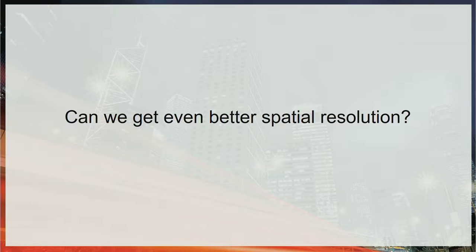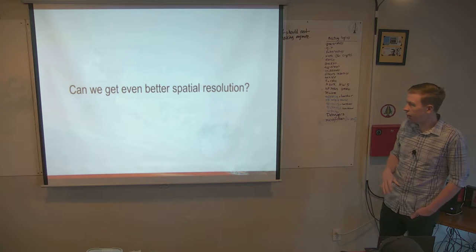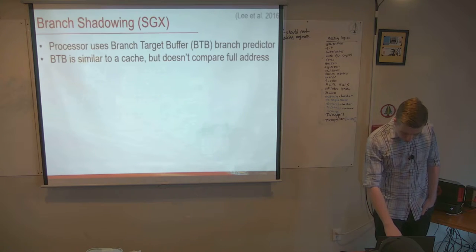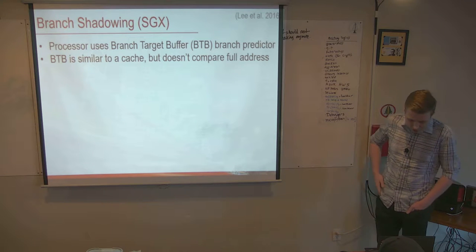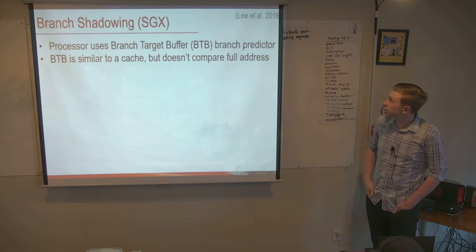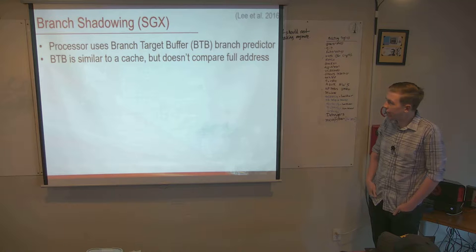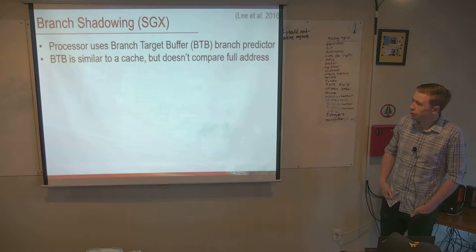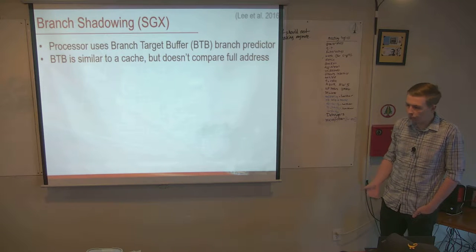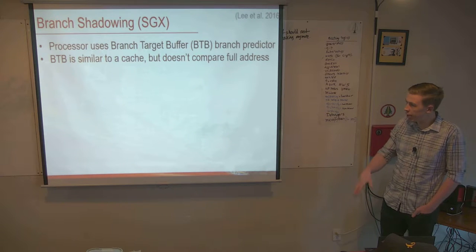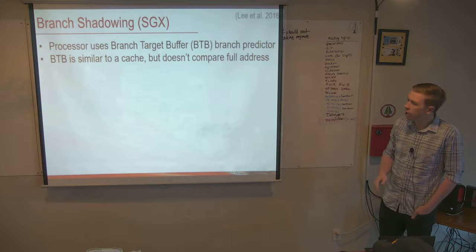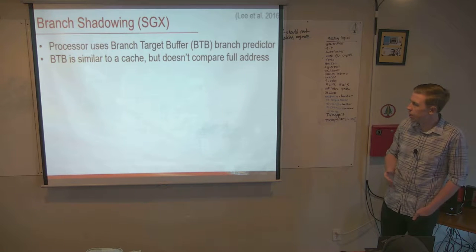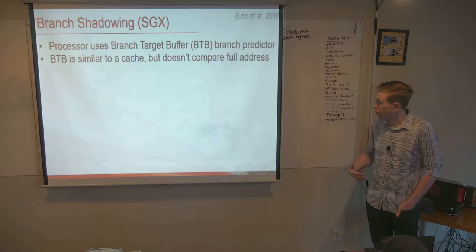The question is: can we get even better spatial resolution than the 64-byte limit from the L1 data and instruction caches? On Intel SGX, that is possible using something called a branch shadowing attack. The branch shadowing attack uses the branch target buffer for branch prediction — when you encounter a branch or if-statement, you want to predict which direction it takes because that makes your process run more quickly. The branch target buffer is similar to a cache, but instead of comparing the full address to what's in the cache, it does only a partial comparison.